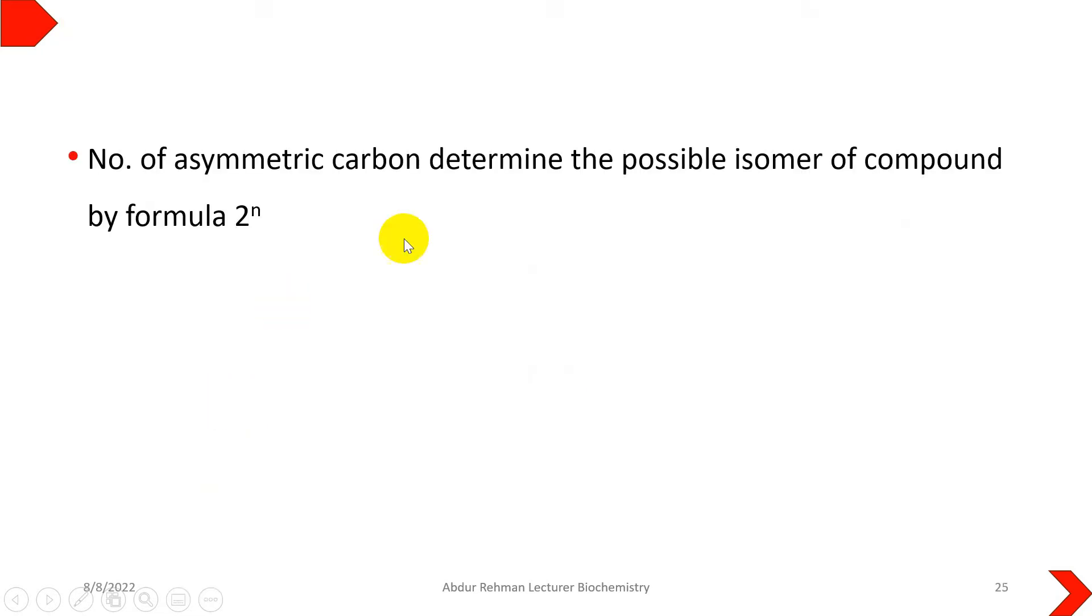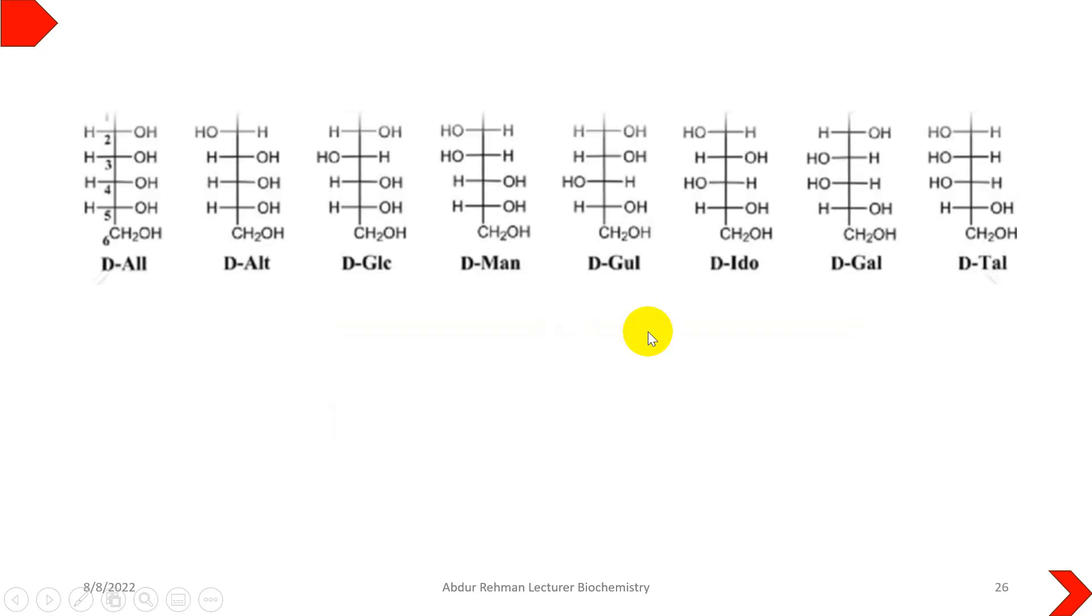This can be calculated by the formula 2^n. In D glucose, we have four asymmetric carbons, so there is a possibility of 16 isomers of D glucose.